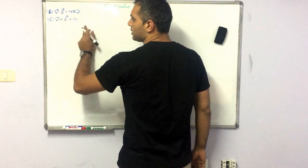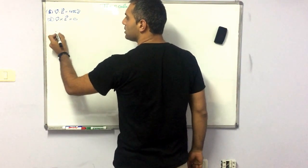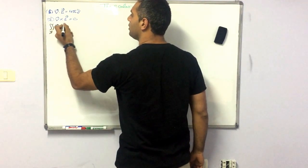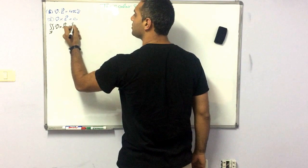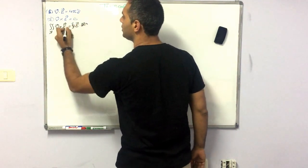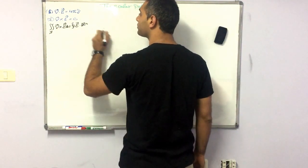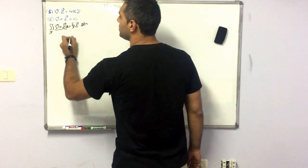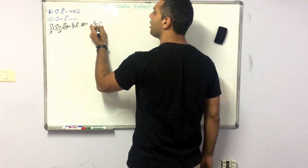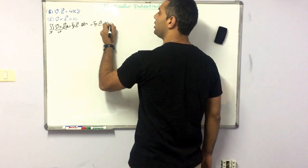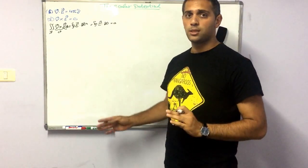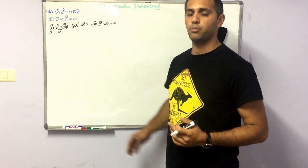We will begin from the second equation, and using Stokes' theorem, the surface integral of the curl of E equals the closed-path integral of E dot dL. This is equal to zero by equation two, and that means that the closed-path integral of E dot dL equals zero, which means that this integral doesn't depend on the initial and final point of the path.